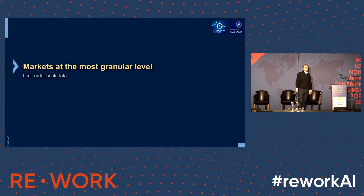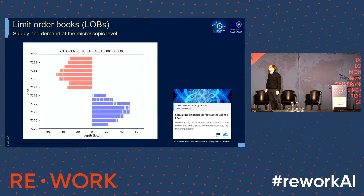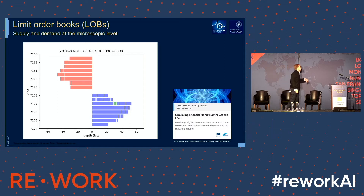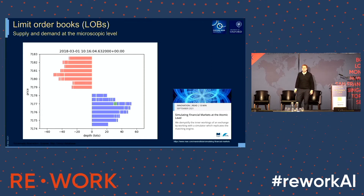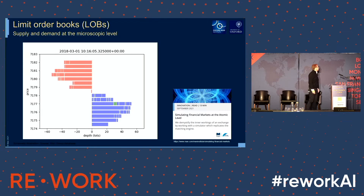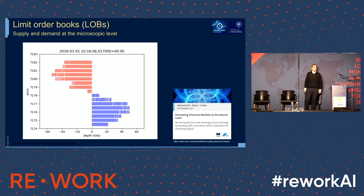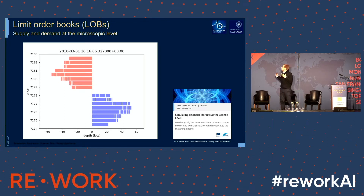The first bit I wanted to get to is the data — microstructure data and limit order book data. Most of you are probably familiar with limit order books. That's the internal state kept at an exchange representing the outstanding orders to buy and to sell. Here's just a little animation of a limit order book. You see the levels of orders to buy and the levels of orders to sell, also called the bid and the ask respectively. The top levels, which are closest together, are the best bid and the best ask, and their intersection is just the mid price — the price you see on a Bloomberg terminal.